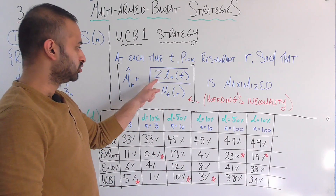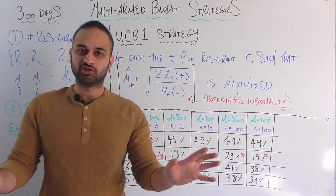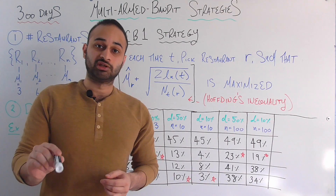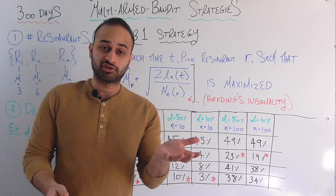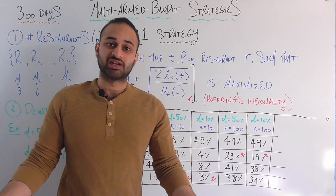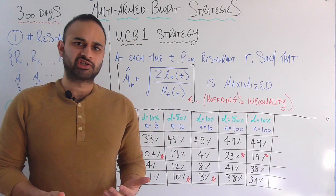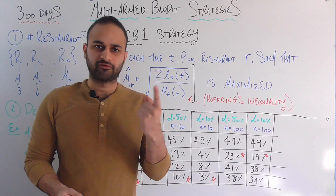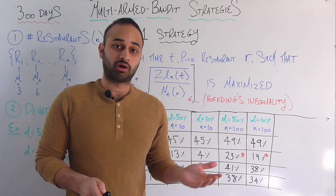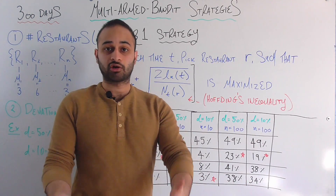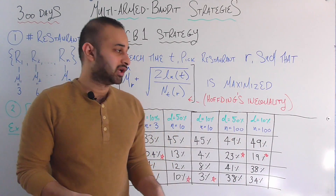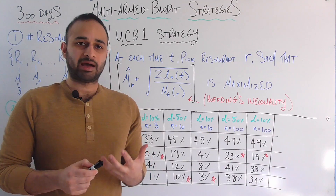The second part of the UCB formula is the square root of 2 times the natural log of t divided by n-sub-t-r. The denominator n-sub-t-r is the number of times you've visited restaurant r so far — in the theoretical scenario, that's 1 for one restaurant and 100 for the other. Natural log of t is simply the natural log of the current time step. This formulation is based on an inequality called Hoeffding's inequality — I'll leave a link in the description if you'd like to look it up — and we used it to derive this upper confidence bound.